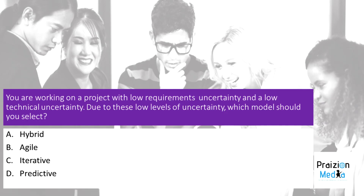You are working on a project with low requirements uncertainty and low technical uncertainty. Due to these low levels of uncertainty, which model should you select? A. Hybrid. B. Agile. C. Iterative. D. Predictive.